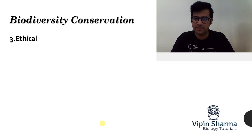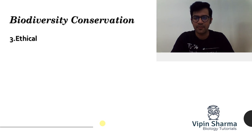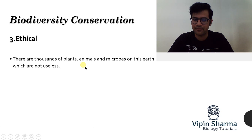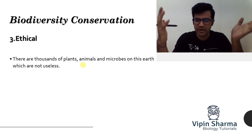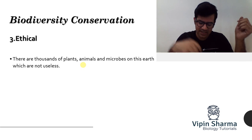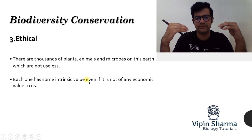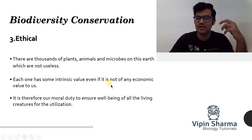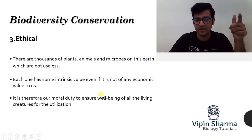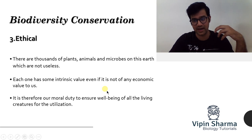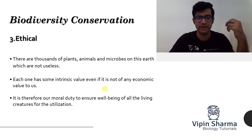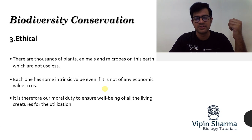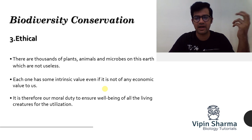The third point which comes into picture is ethical. The word ethical means moral. There are thousands of plants and organisms living on earth which are not completely of economic benefit to us, but they have some intrinsic value. For that we have a moral responsibility and a moral duty to ensure their well-being — they also have the right to live on earth as we do. So narrow utilitarian, broadly utilitarian, and ethical are the three concerns for why we conserve biodiversity.